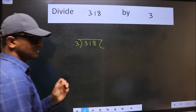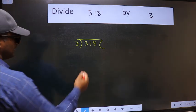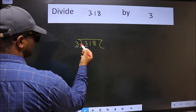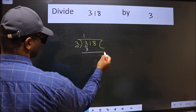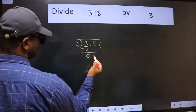This is your step 1. Next, here we have 3. Here also 3. When do we get 3 in 3 table? 3 once 3. Now we should subtract. We get 0.